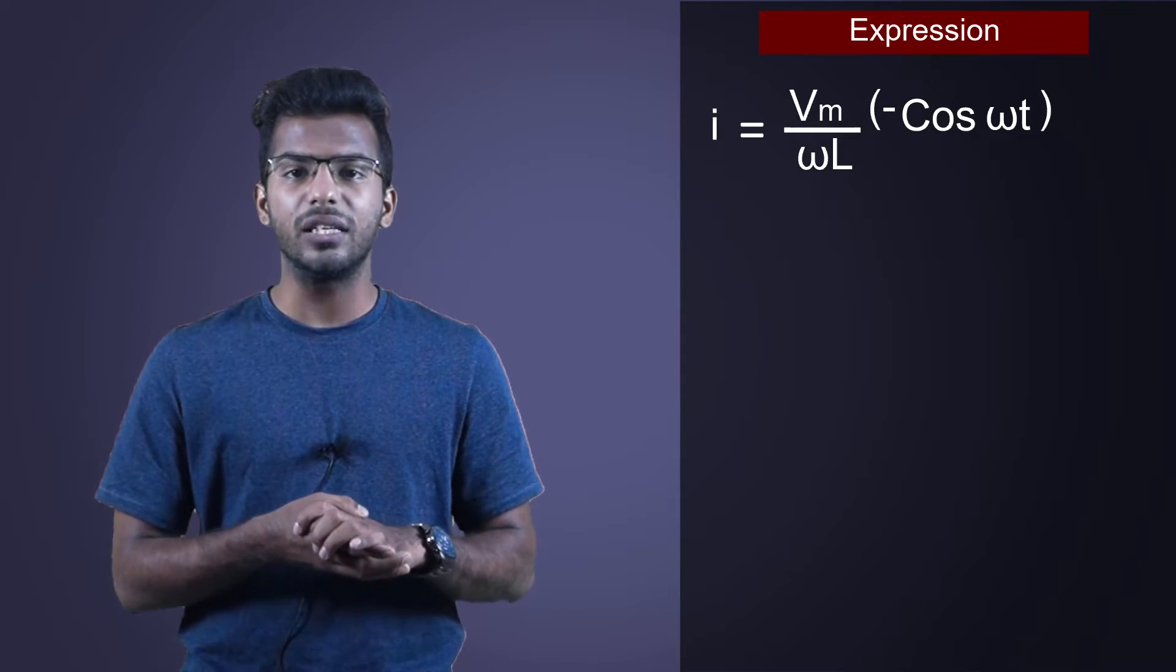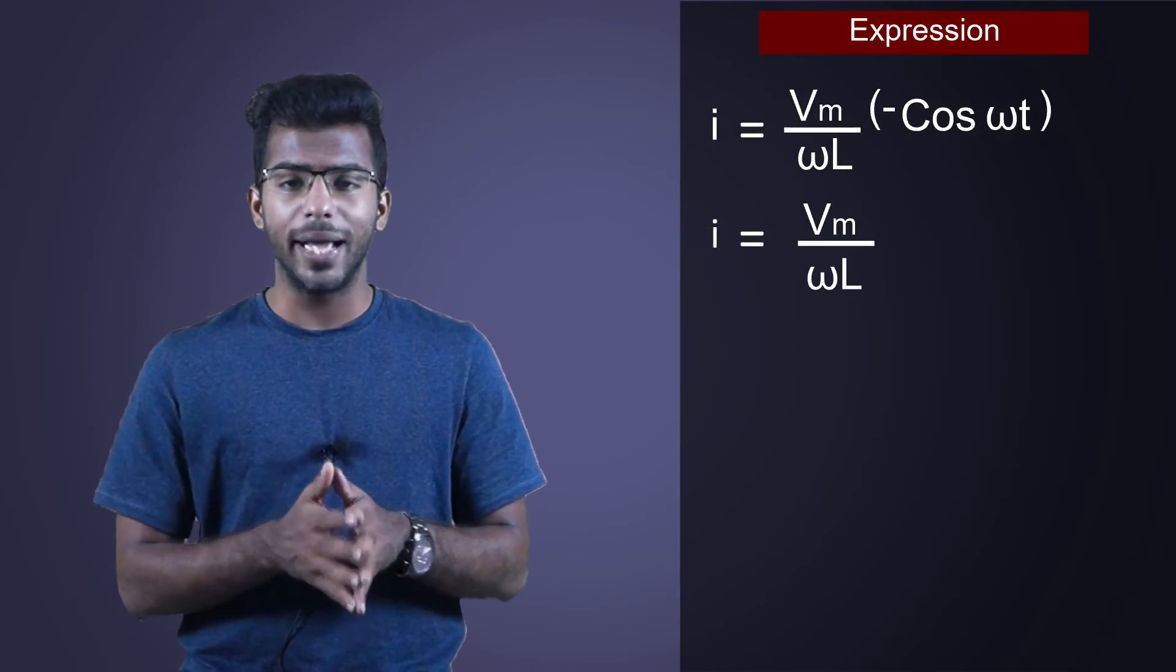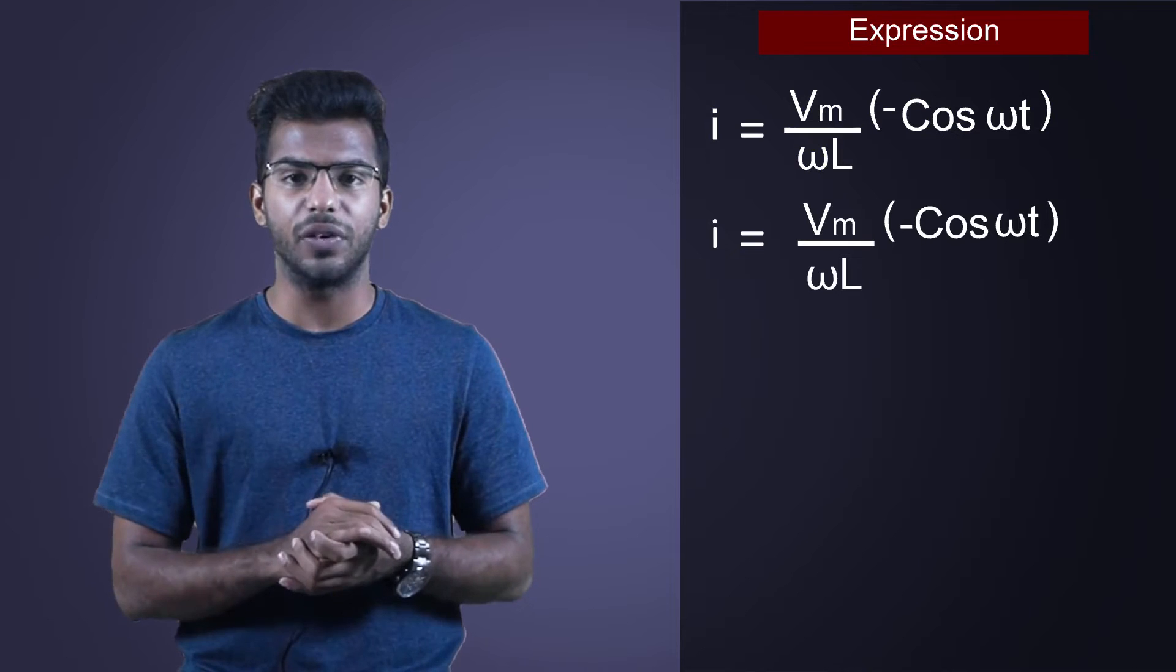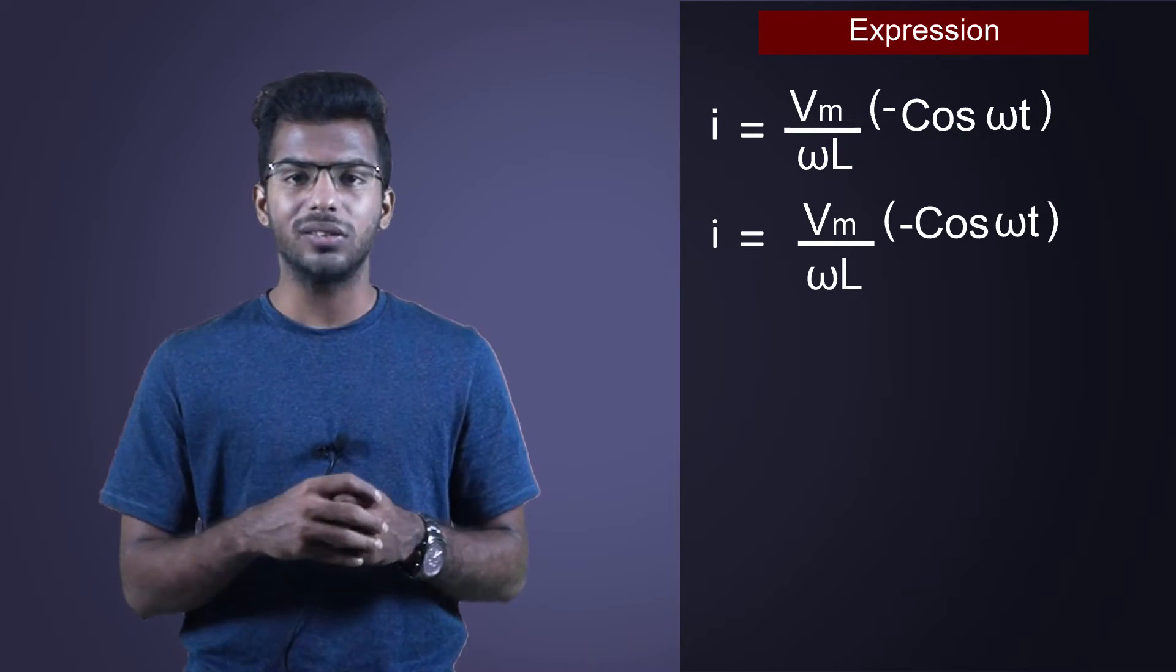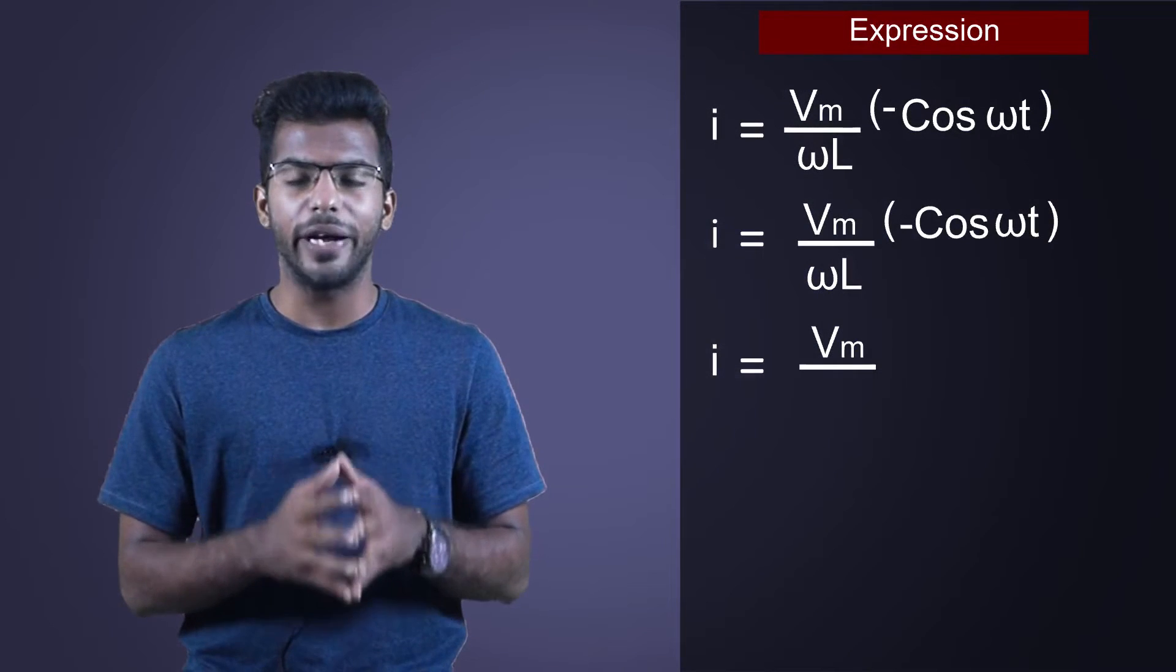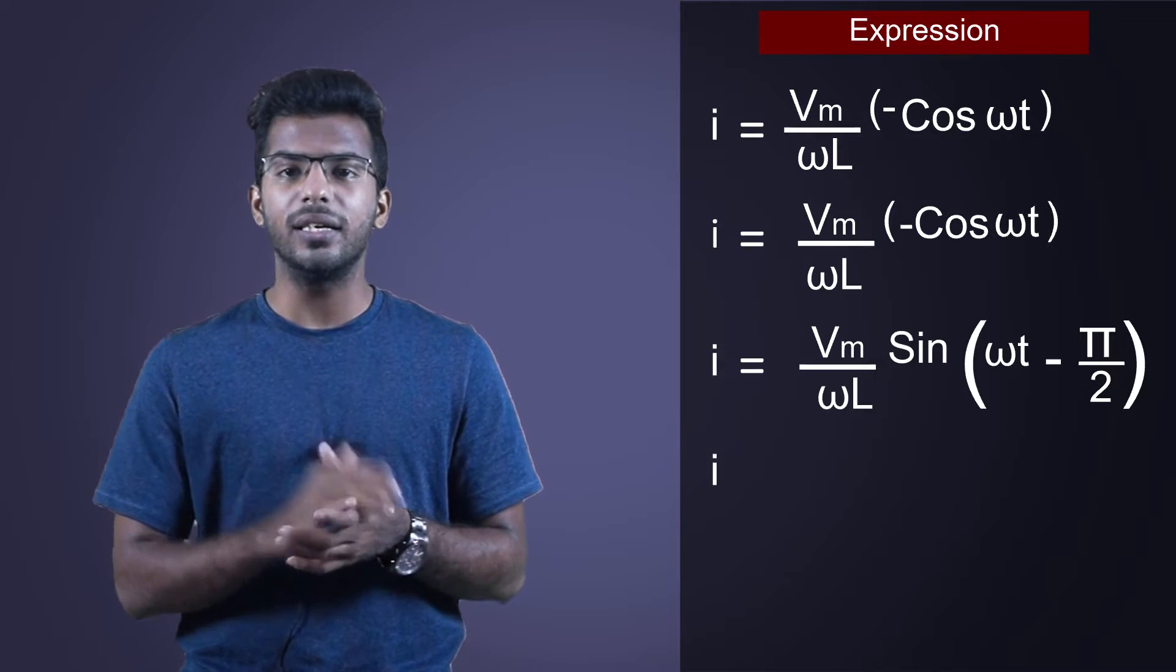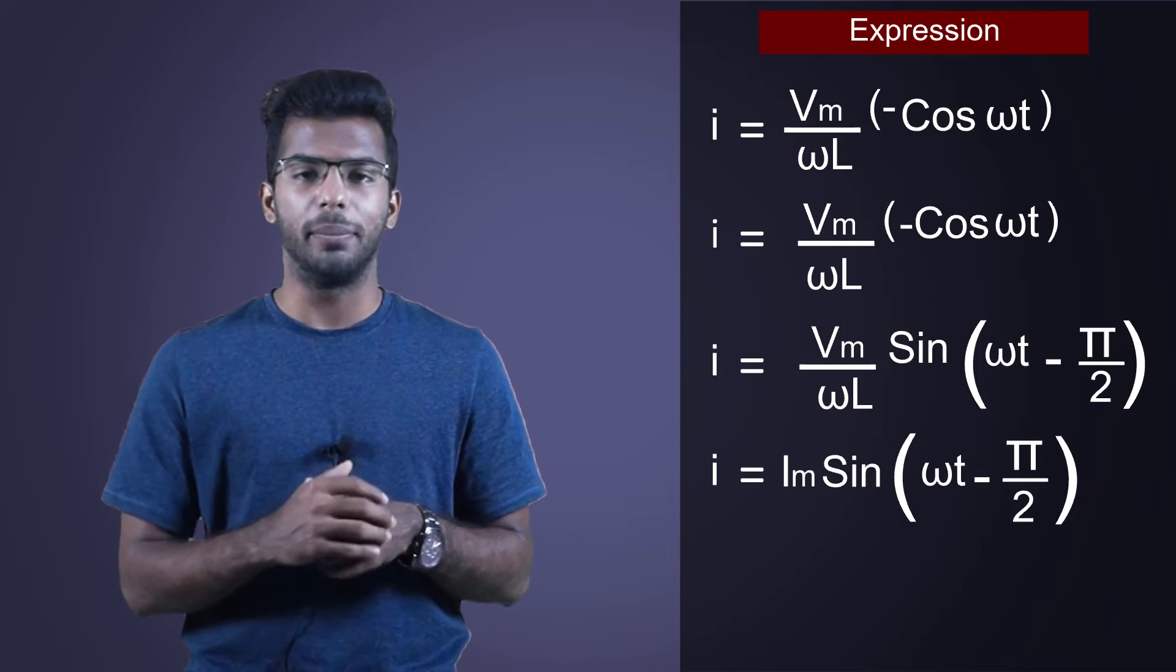We have the instantaneous value of current as I is equal to Vm divided by omega L into cos omega t. We have general rule of representing voltage and current in sin functions. So in this equation, we convert cos into sin. That will be I is equal to Vm divided by omega L sin omega t minus pi by 2. So finally, I is also equal to Im sin omega t minus pi by 2.